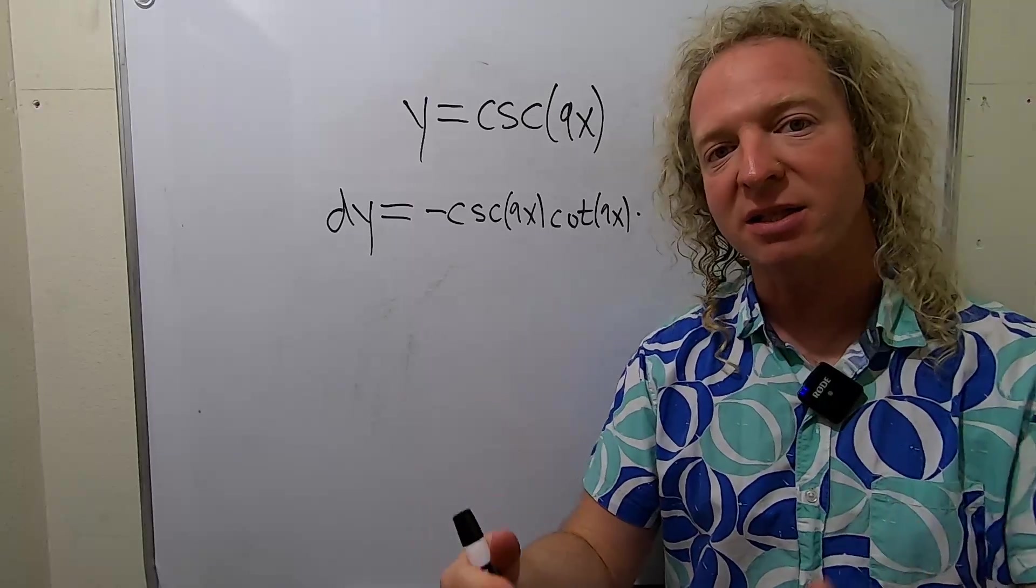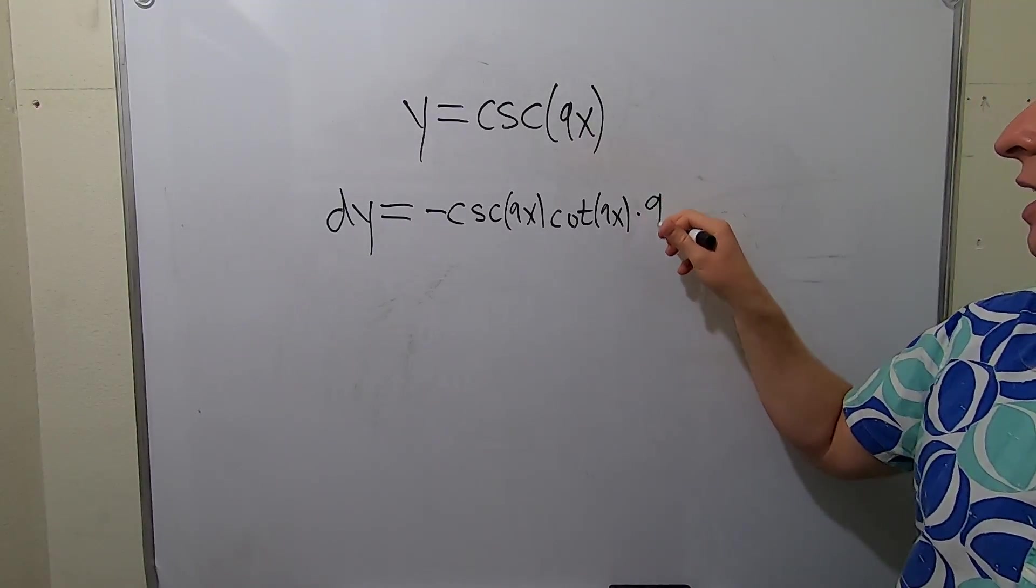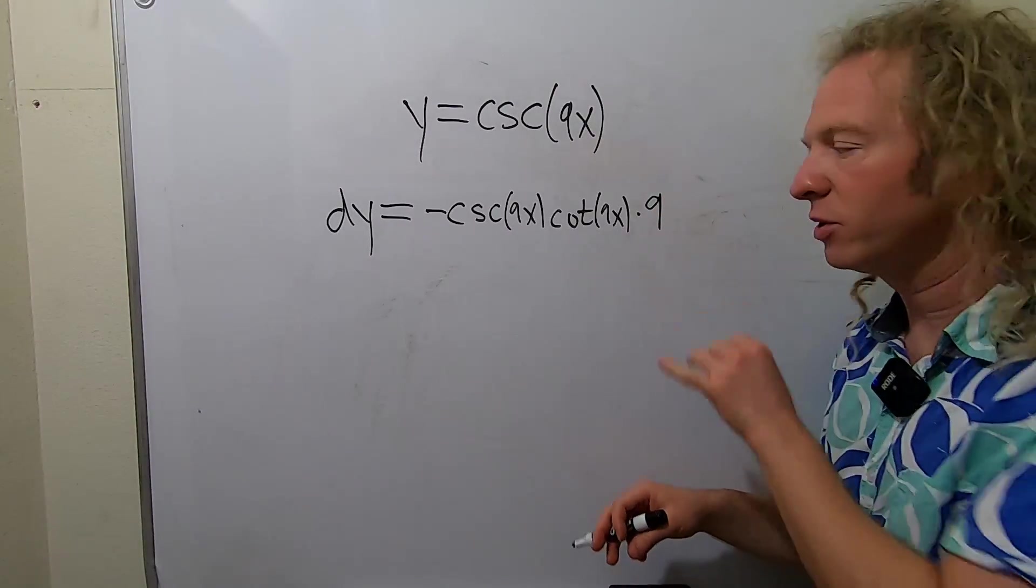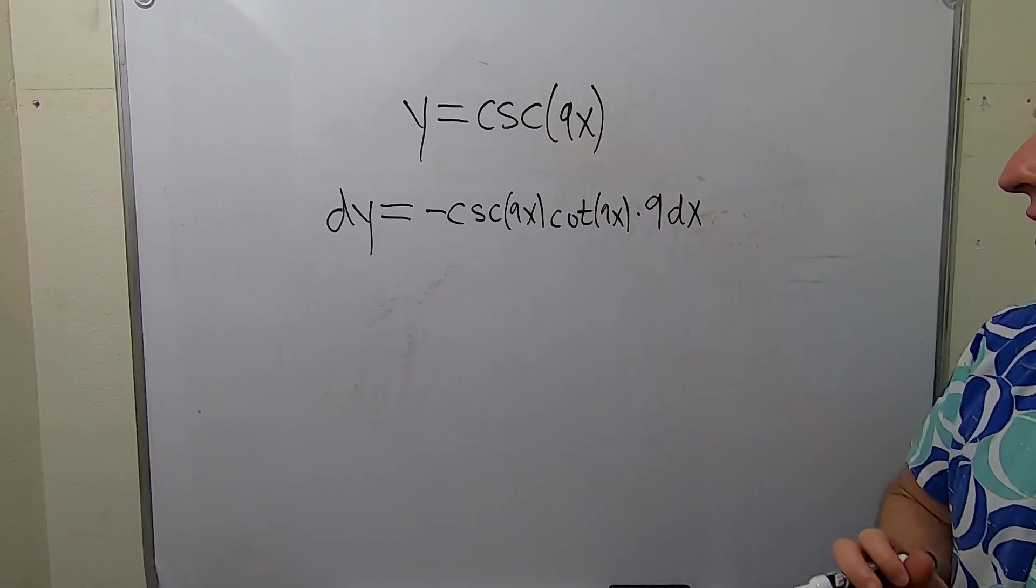So our inside function is 9x, so its derivative is 9. At the end, it's really important to always put your dx. Very key.